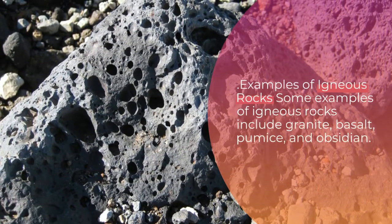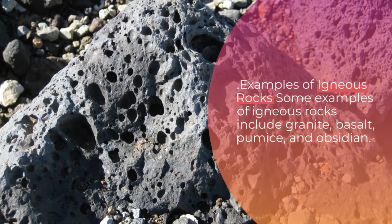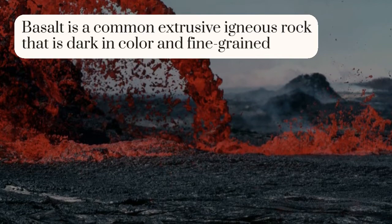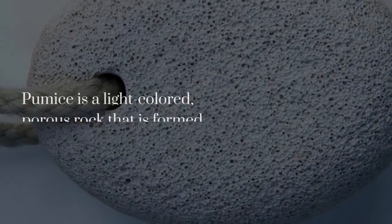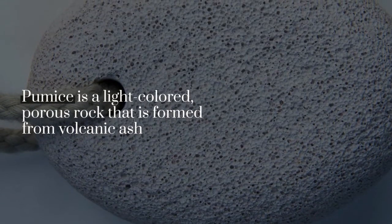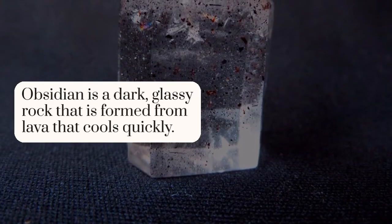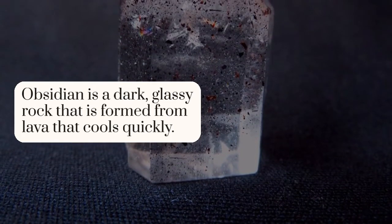Some examples of igneous rocks include granite, basalt, pumice, and obsidian. Basalt is a common extrusive igneous rock that is dark in color and fine-grained. Pumice is a light-colored, porous rock that is formed from volcanic ash. Obsidian is a dark, glassy rock that is formed from lava that cools quickly.